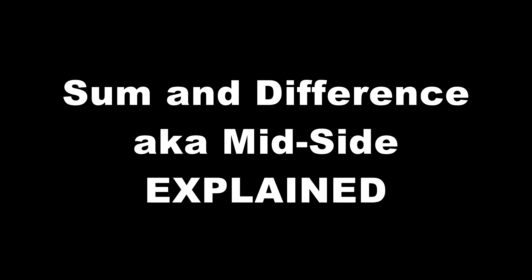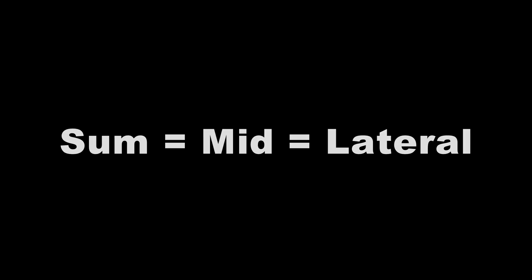Have you ever come across an audio plug-in control that says MS or mid-side? This is the sum and difference control. Although sum and difference is the proper terminology, usually mid-side is what's on the label. The sum of a stereo audio signal refers to its center information — the signal divided equally among the two stereo channels — which creates what is known as a phantom center channel. This is also called mid, or sometimes lateral.